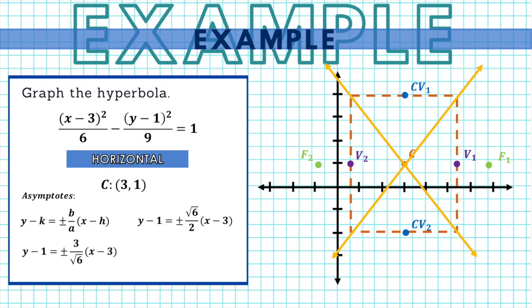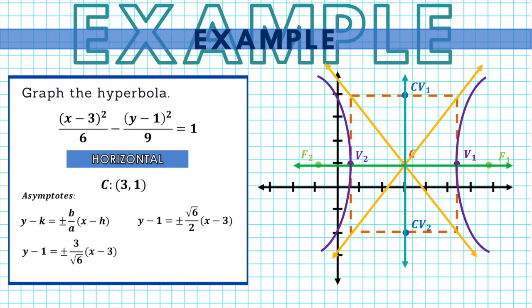Next, we graph the transverse axis — the green line — which intersects the foci, vertices, and center. Then we graph the conjugate axis along the co-vertices and center. Finally, we graph the curves of the hyperbola, starting at each vertex and going closer and closer to the asymptotes but never touching them. This is how we graph a hyperbola.